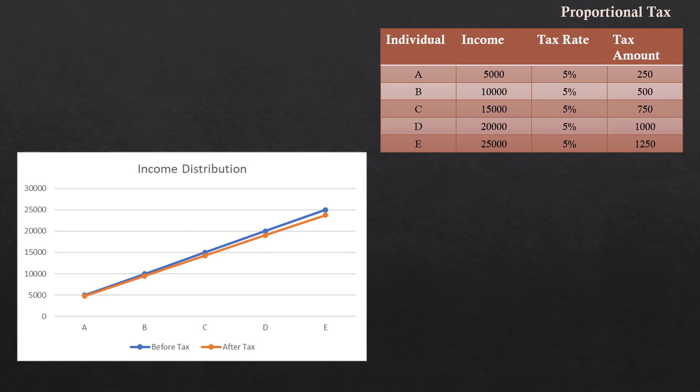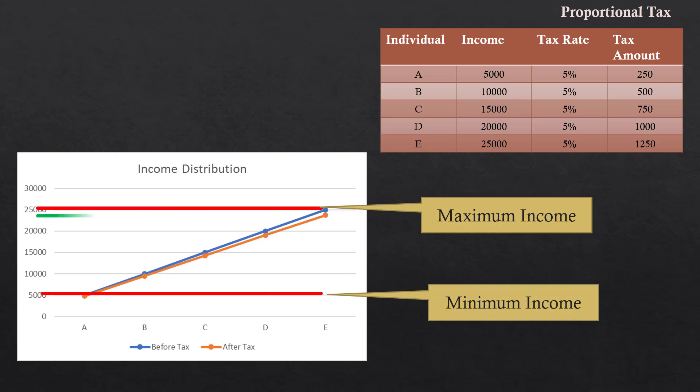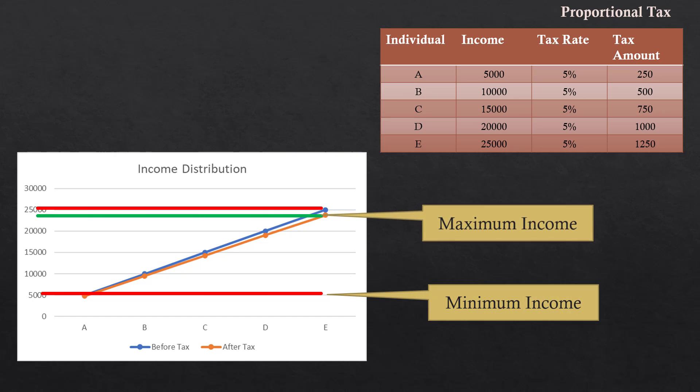Look at this graph. The blue color line shows the income distribution before tax. The orange color line shows the income distribution after tax. The disparity is reduced only marginally after paying the tax.